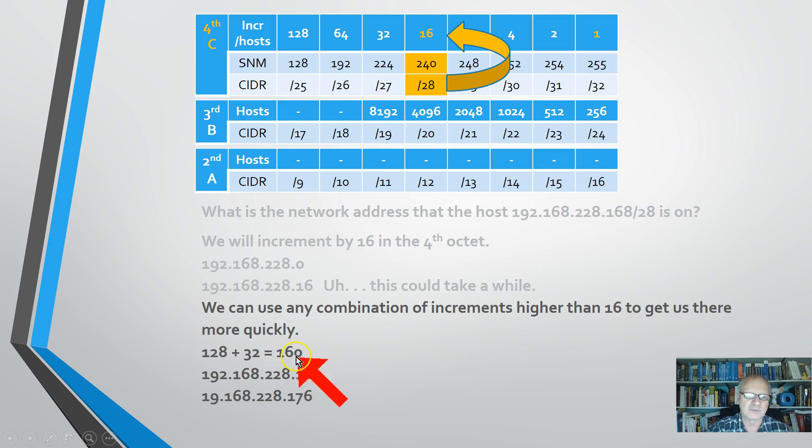Then I'm going to go ahead and do another 32 to get to 160. Now I'm getting close. So now I'm going to increment my one. I'm going to go to 160. Increment to 176. And oh, I'm at 168. So I'm on this network here, the 160 network. Because the 176 network is the next network up.